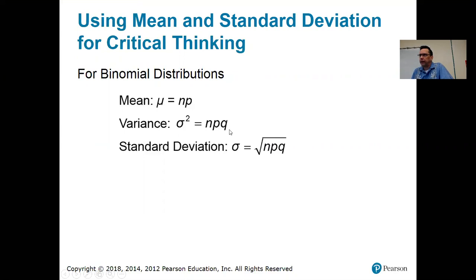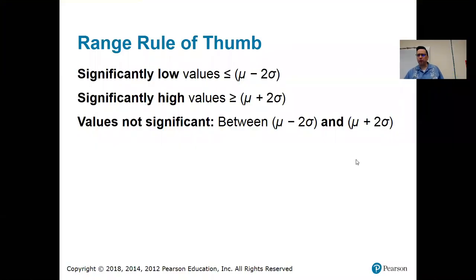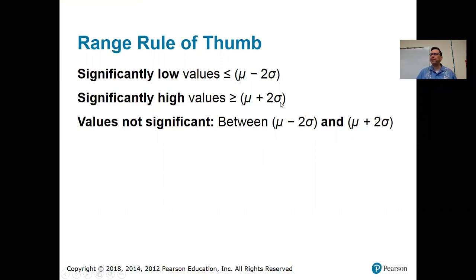The variance of a population is sigma squared, and for a binomial random variable that is n times p times q. The standard deviation is just the square root of the variance. Significantly low values are any values more than two standard deviations below the mean. Significantly high values are at least two standard deviations above the mean. Values that are not unusual are anything within two standard deviations of the mean.